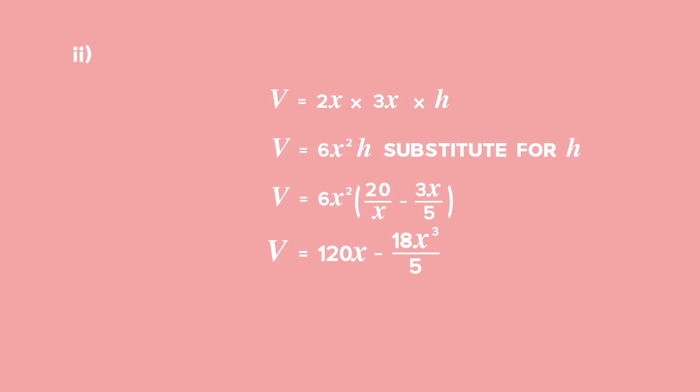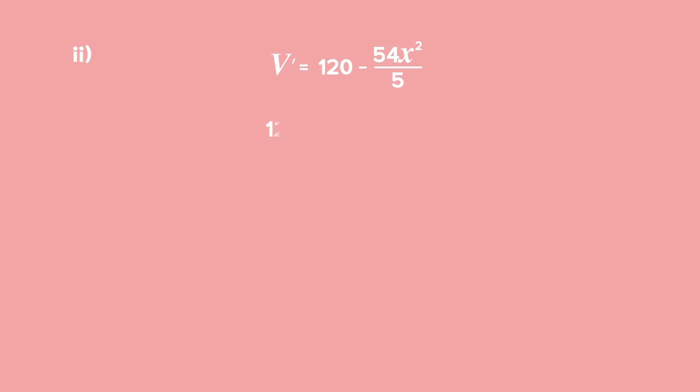Differentiate the equation. V' = 120 - 3(18/5)x² = 120 - 54x²/5. Set the derivative equal to 0. Solve for x². Take the square root of both sides of the equation to find values for x.